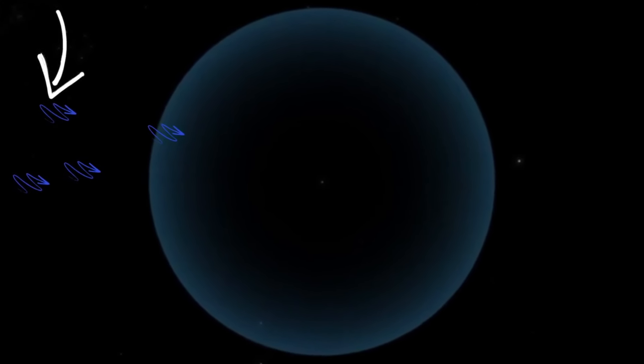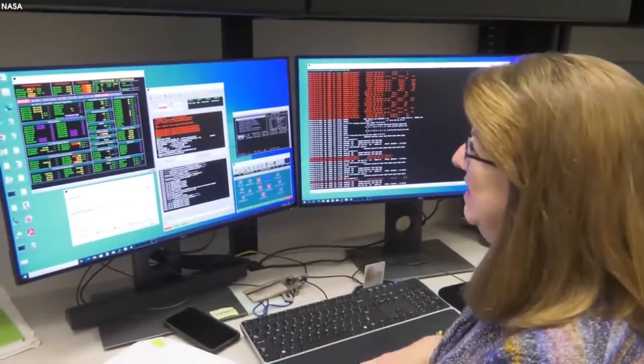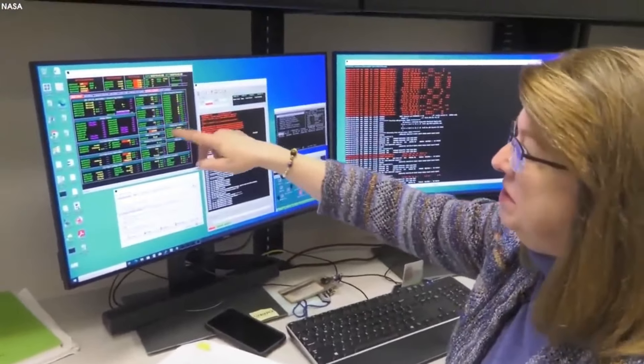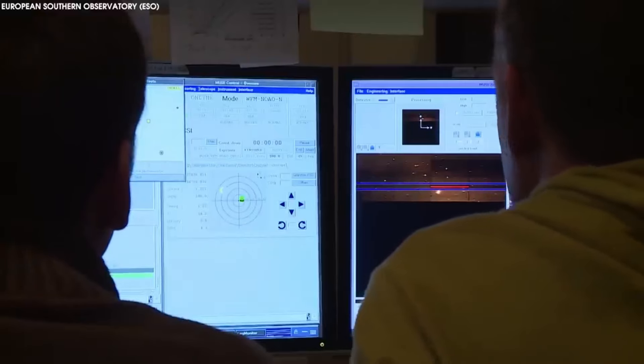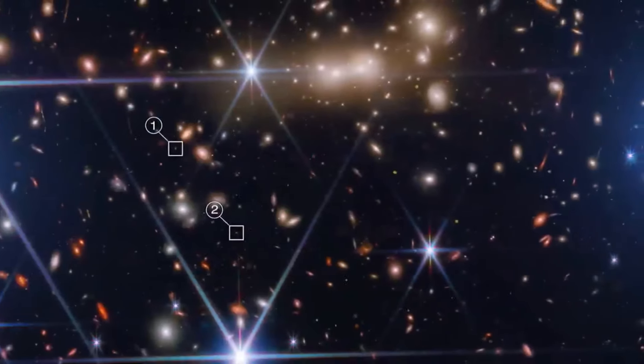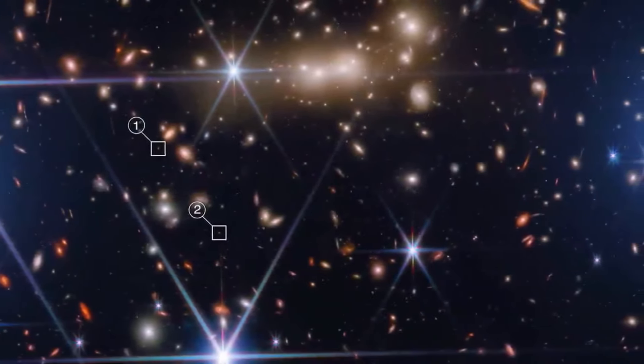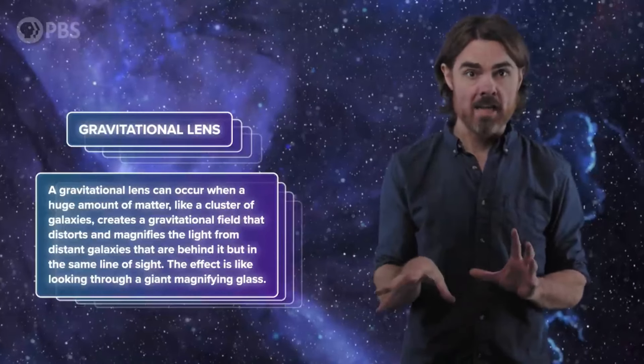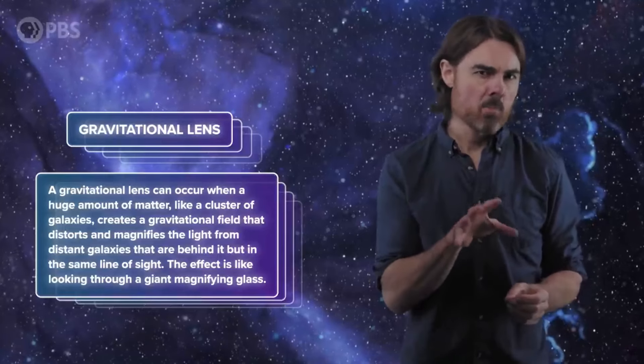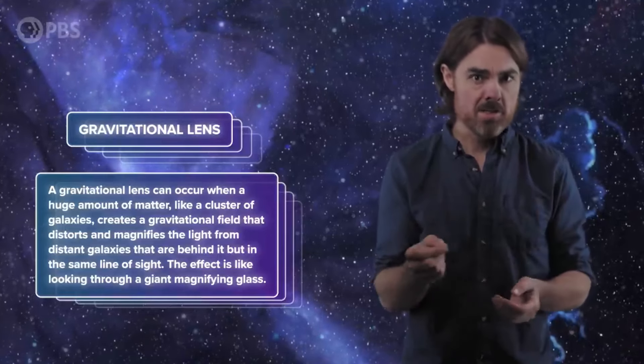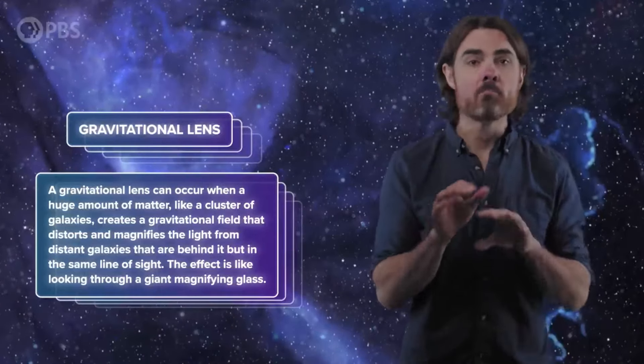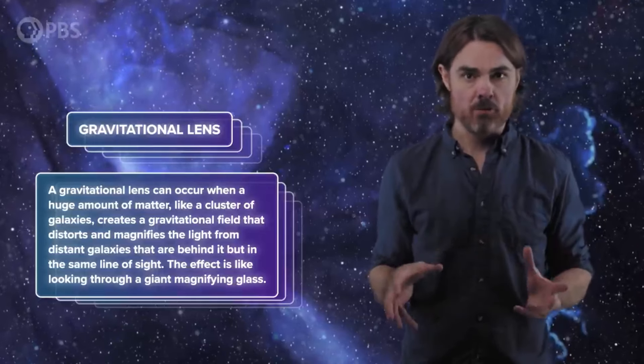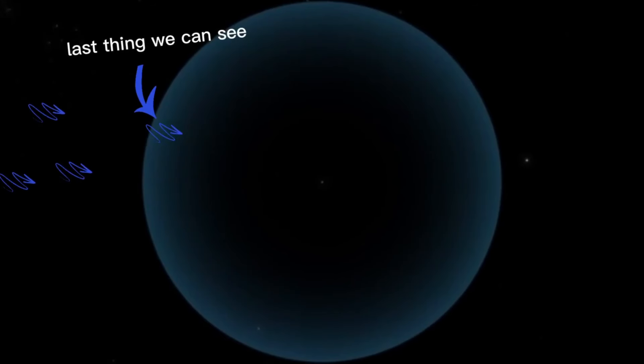Meanwhile, researchers studying the Jovian moon Ganymede uncovered striking evidence of strike-slip faults akin to seismic features observed on Earth's surface. These faults, generated by the gravitational interactions between Ganymede and Jupiter, hold significant implications for the moon's geological processes and potential habitability. Elsewhere, efforts to unravel the mysteries of Venus's atmosphere led scientists to utilize the Stratospheric Observatory for Infrared Astronomy, SOFIA, to gather crucial data.